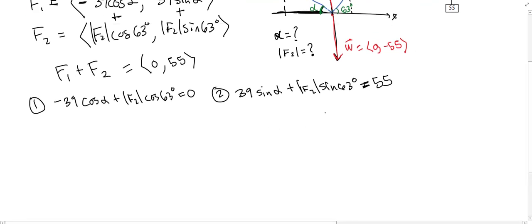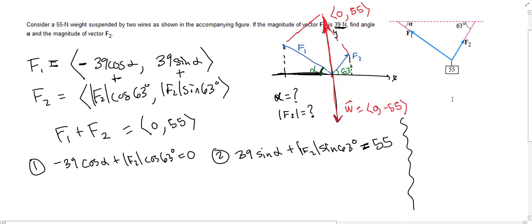Now real quick, before we get into solving the system of equations, I just want to make a side note that this is not the only way to do this problem. What you could also have done, instead of adding the two vectors, is recognize the forces are in equilibrium. So if you call this w for the weight going down, this is another way to solve it. You could say F1 plus F2 plus W equals 0, because the wires are holding up the weight, the weight's pulling down on the wires, and everything's stationary. So that's another way to solve it, and you would have gotten these same two equations to work with.